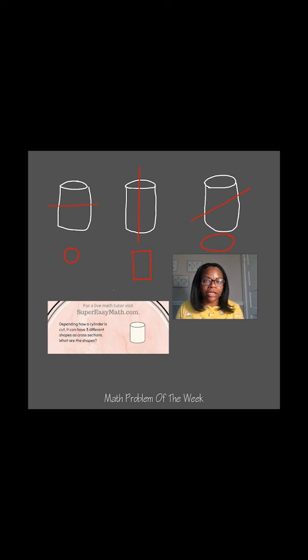So those are the three cross section shapes that can be created by various cuts to a cylinder.